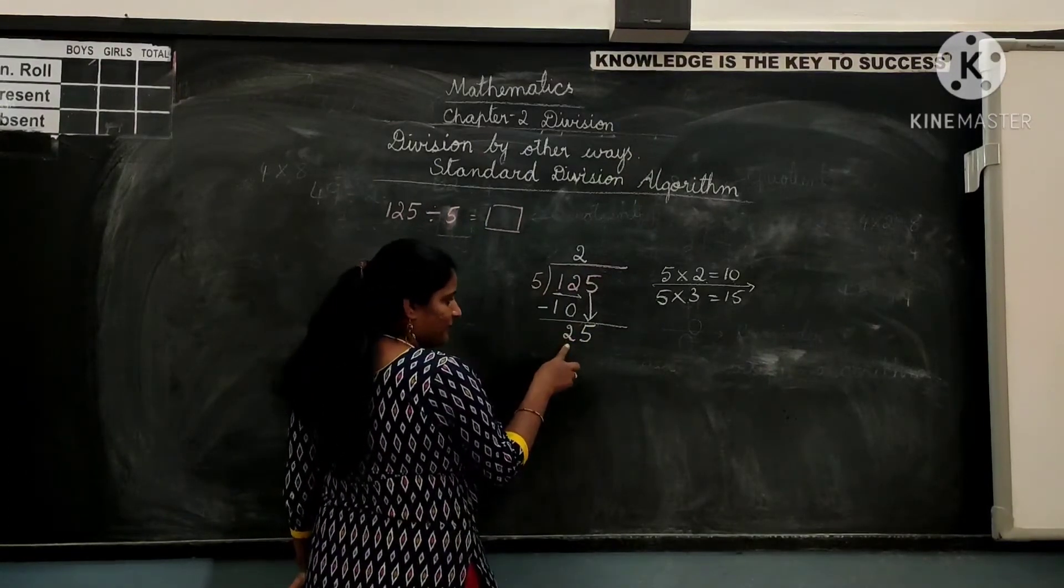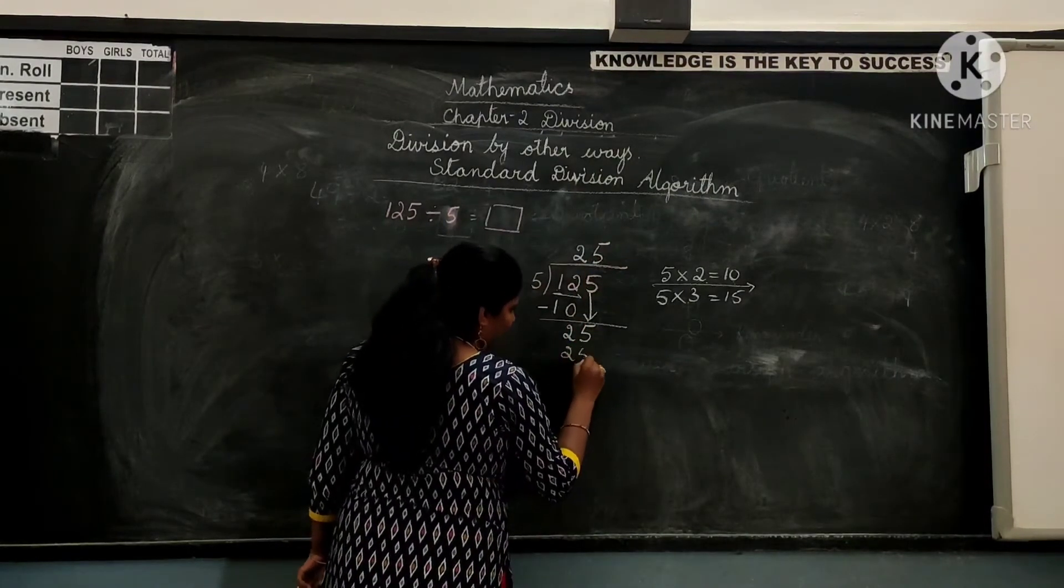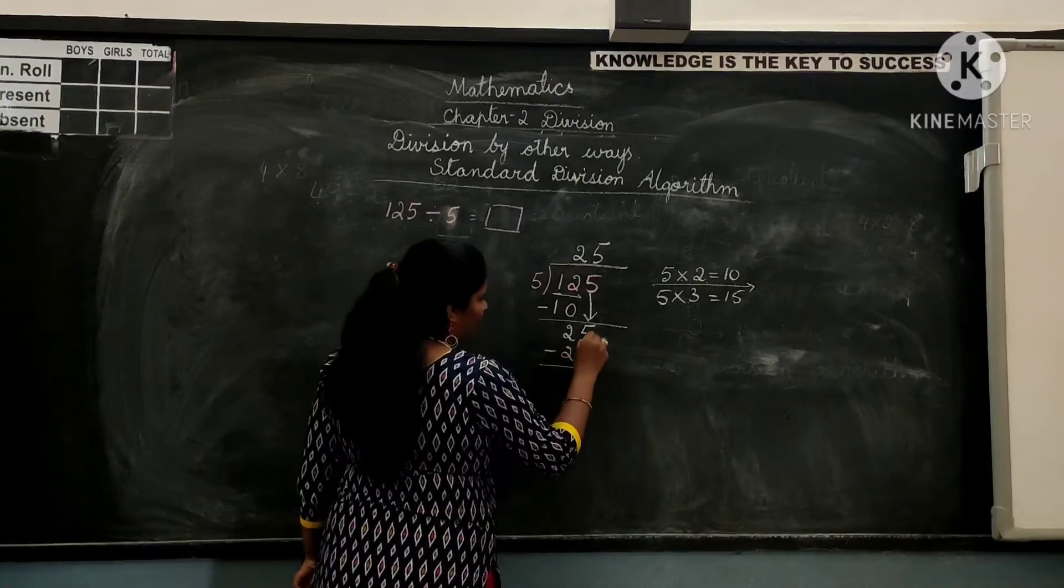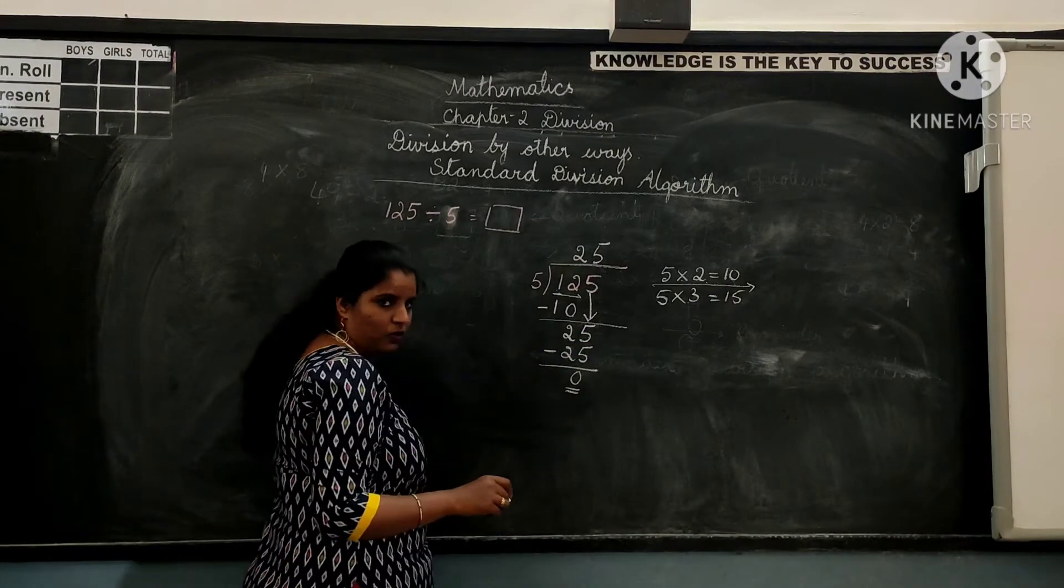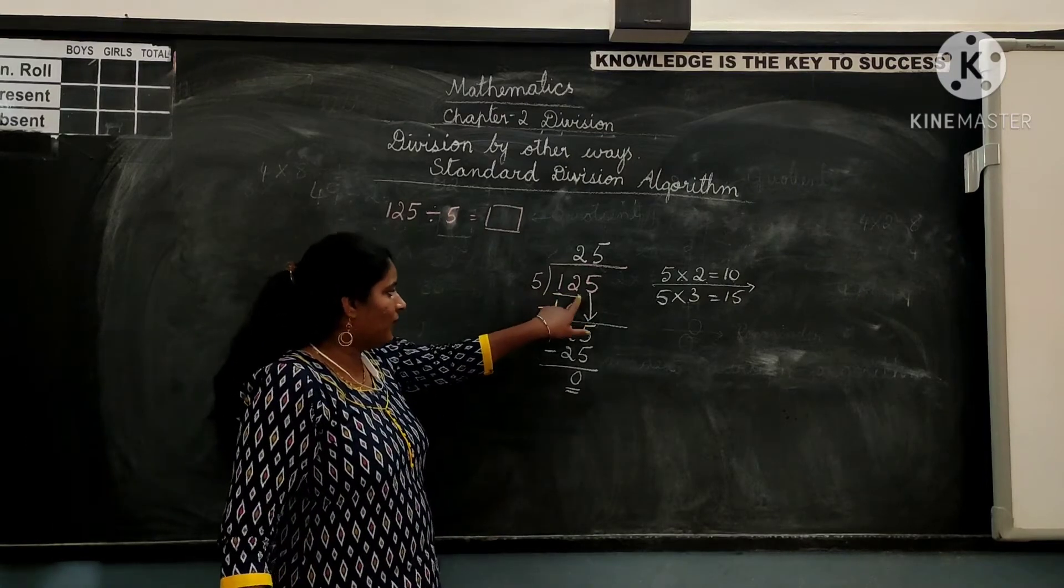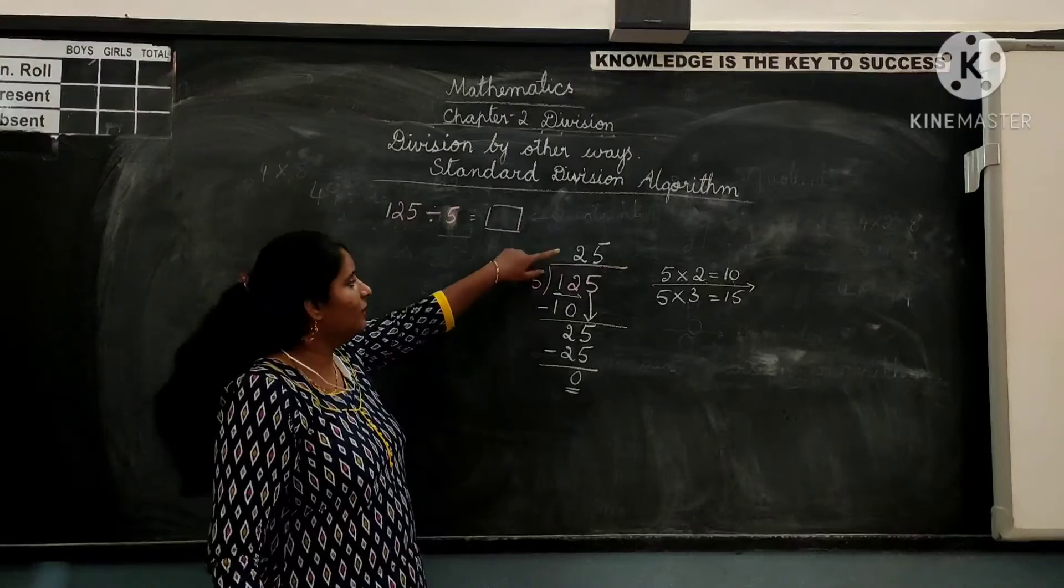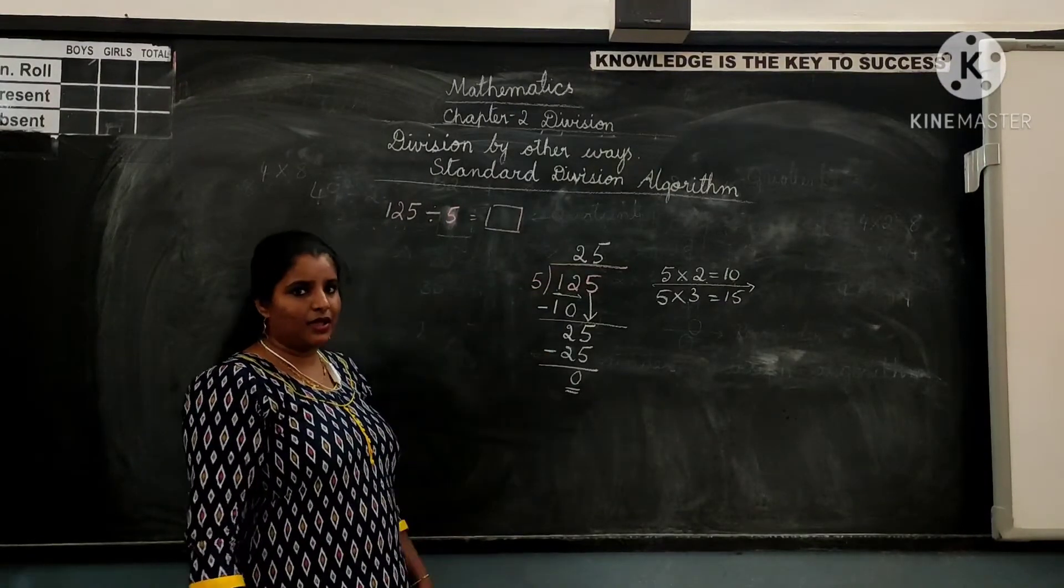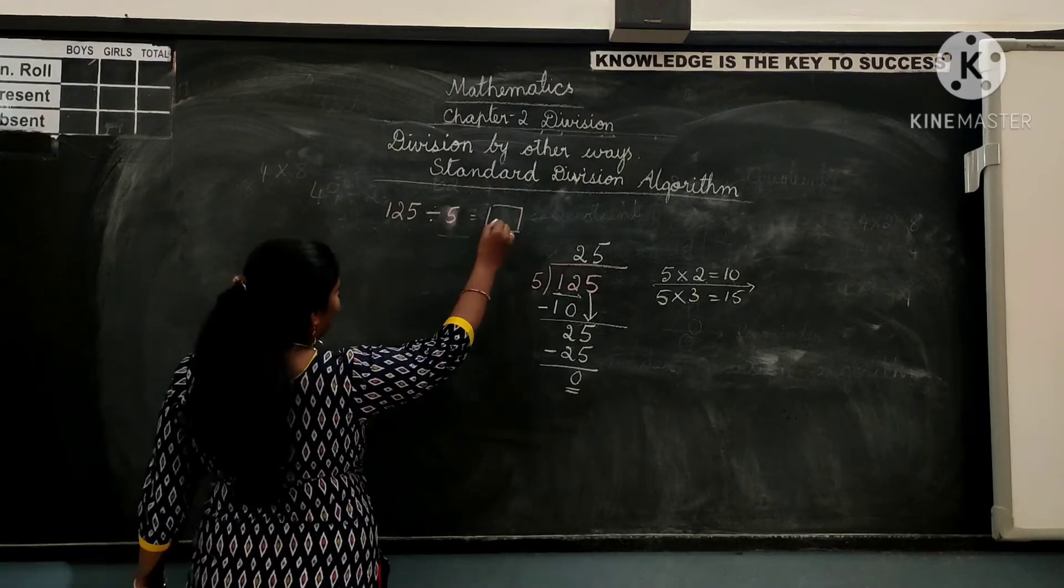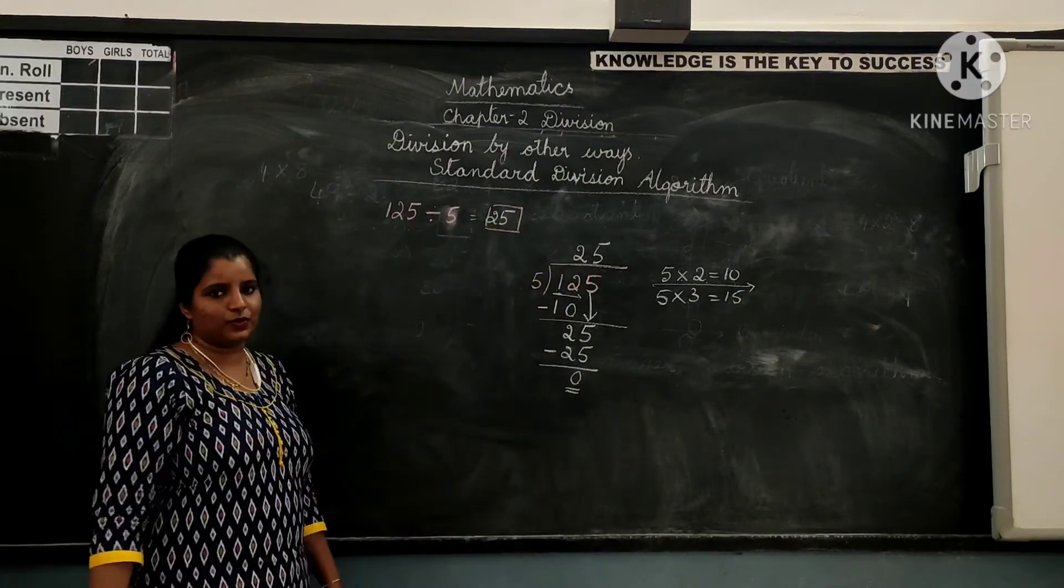So now 25 is the dividend. 5, how many times give us 25? We know 5 times 5 gives us 25. Subtract 25 minus 25 gives you 0. So here, 125 is the dividend, 5 is the divisor, 25 is the quotient and 0 is the remainder. So we have 125 divided by 5 gives us 25.